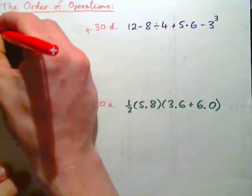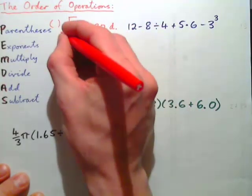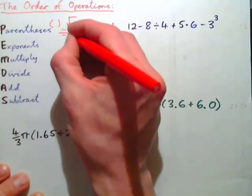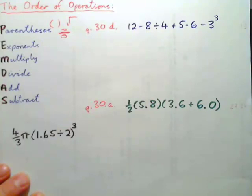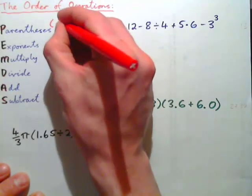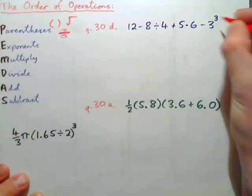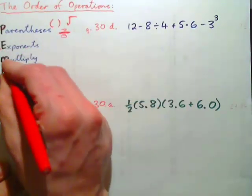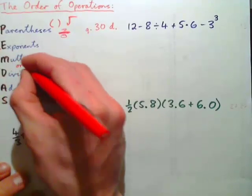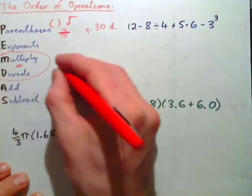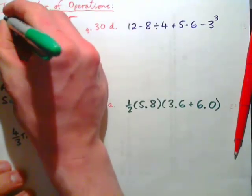The first thing you do is parentheses or any type of grouping symbol — a parenthesis, a square root symbol, or a fraction bar. For fractions, do the top and bottom first, then apply the division. So grouping symbols include parentheses, square root, and fraction bar. Then we do exponents. Third is multiply or divide from left to right — we always go from left to right.